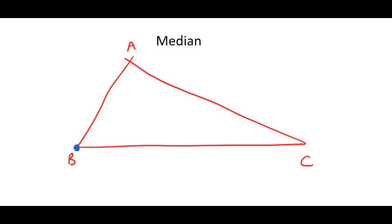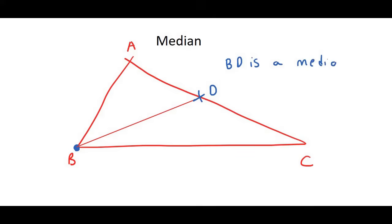So that would be somewhere over here and I'm going to label this point D. So then what we could say is BD is a median. A median is a line that goes from a vertex to the midpoint of an opposite side.